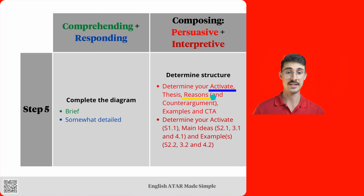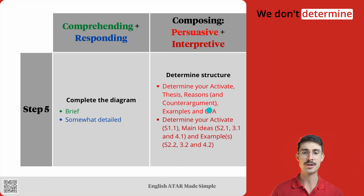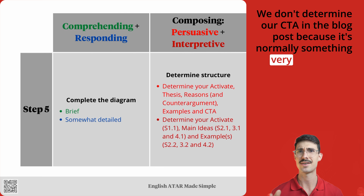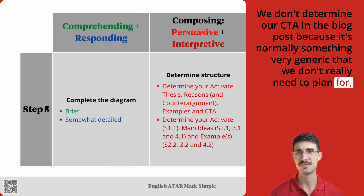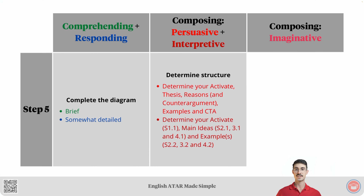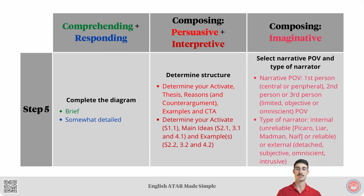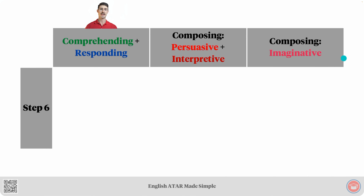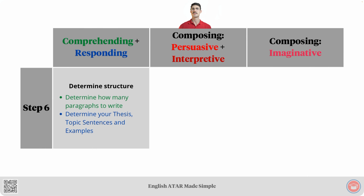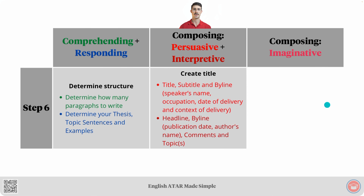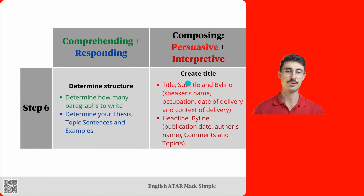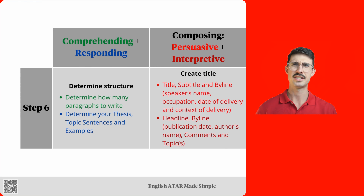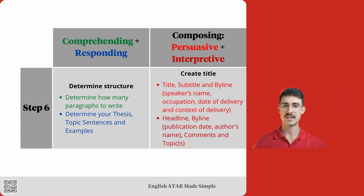Note that you're doing very similar things in step five for persuasive and interpretive texts: determine activate, determine reasons, determine main ideas, determine examples. We don't determine our CTA in the blog post because it's normally something very generic that we don't really need to plan for, such as 'subscribe to the blog post to stay updated.' Step five for imaginative texts requires you to select the narrative POV and the type of narrator. Step number six for comprehending and responding is where we determine structure. Step six for persuasive and interpretive questions is where we create a title — for persuasive it's the title, subtitle, and byline with four sub-elements. For interpretive texts it requires us to create the headline, byline including publication date and author's name, comments, and topics.